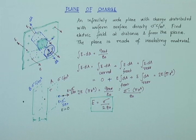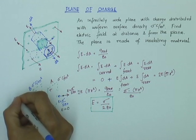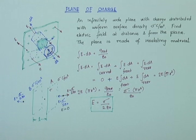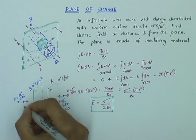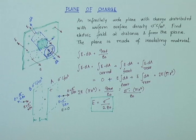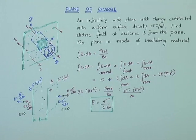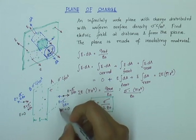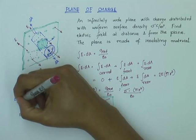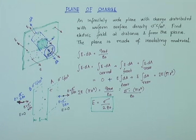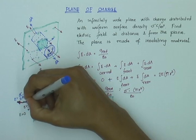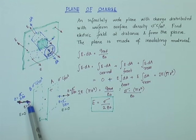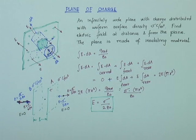Similarly, I can argue for the left-side point. The electric field due to the positive plane acts away from positive charge in one direction, magnitude sigma over 2 epsilon zero. The electric field due to the negative plane acts towards the negative charge, also magnitude sigma over 2 epsilon zero. They are in opposite directions and the resultant E is zero. There was a correction noted: the electric field due to the positive plane must act away from positive charge, and the field due to the negative plane must act towards the negative charge.